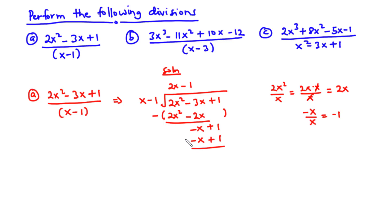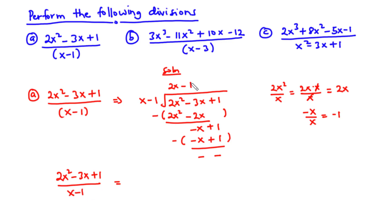Now negative 1 times x is negative x, and negative 1 times negative 1 is plus 1. Subtracting the two expressions: negative x minus negative x is 0, and 1 minus 1 is also 0. So we say that 2x squared minus 3x plus 1 over x minus 1 is equal to 2x minus 1. Because the remainder is 0, the remainder over the divisor is 0, so there's no need to write it. The answer is 2x minus 1.